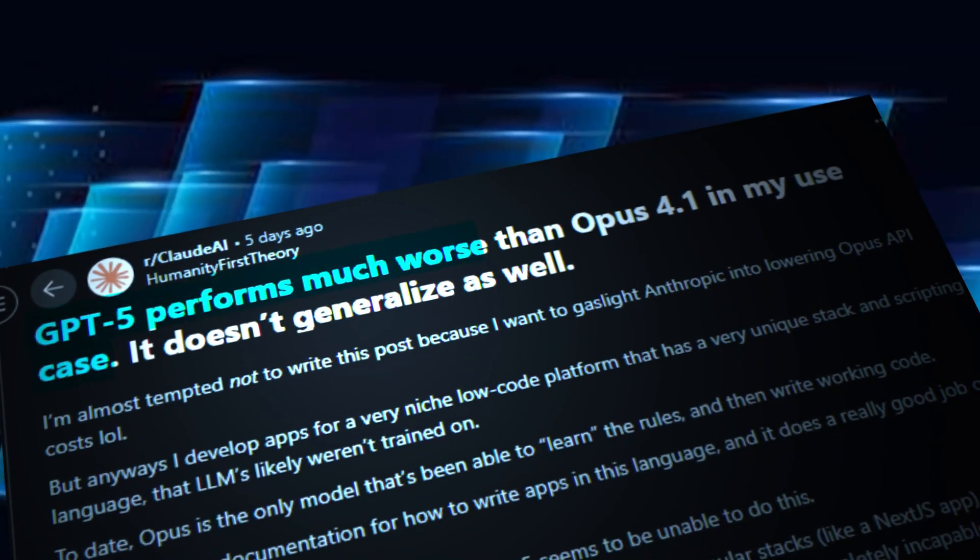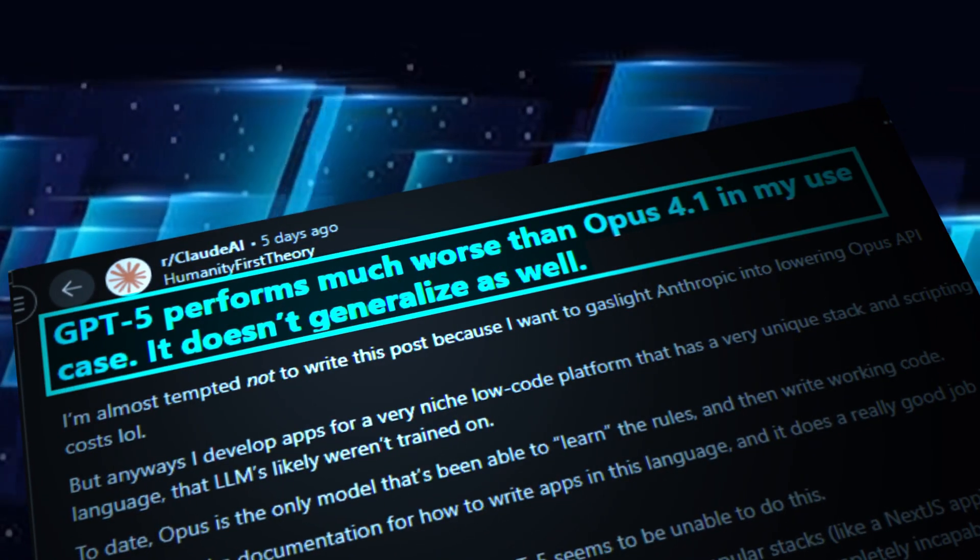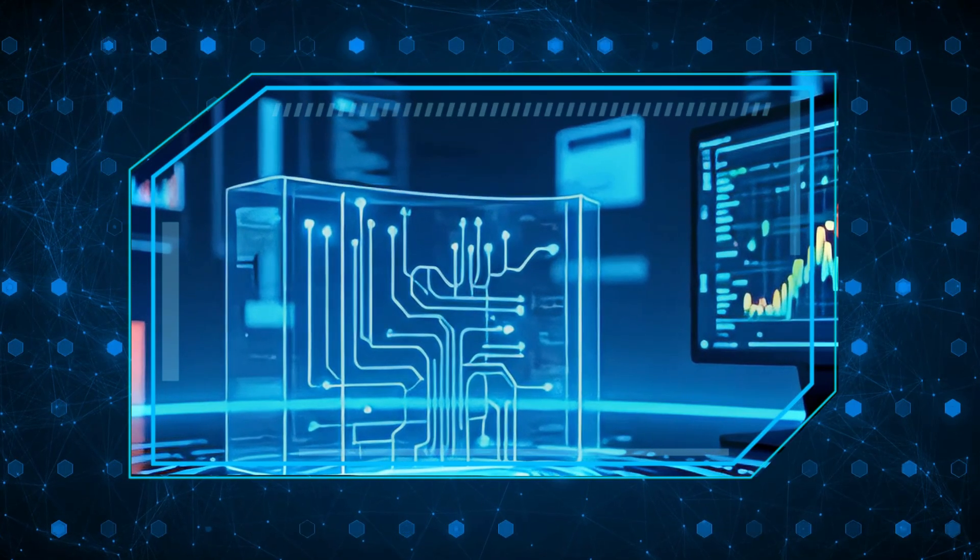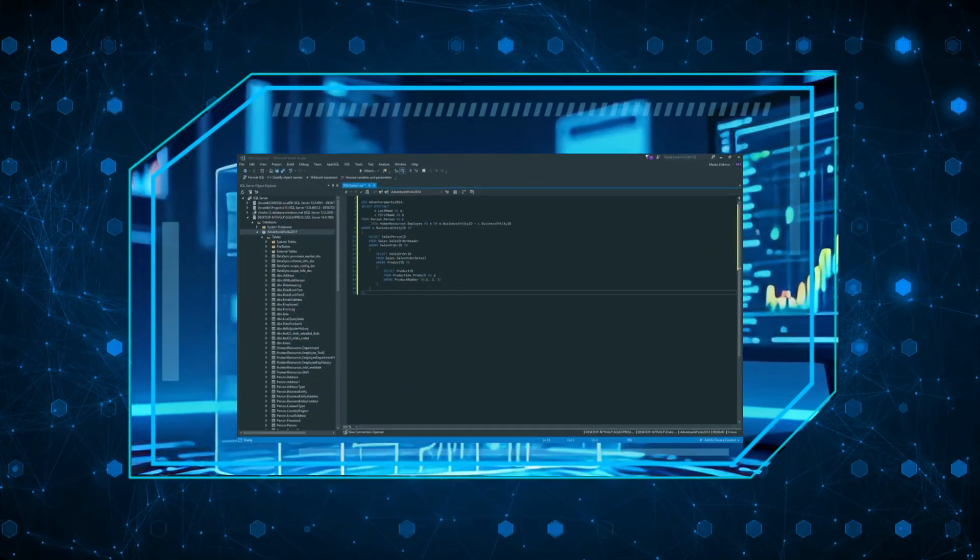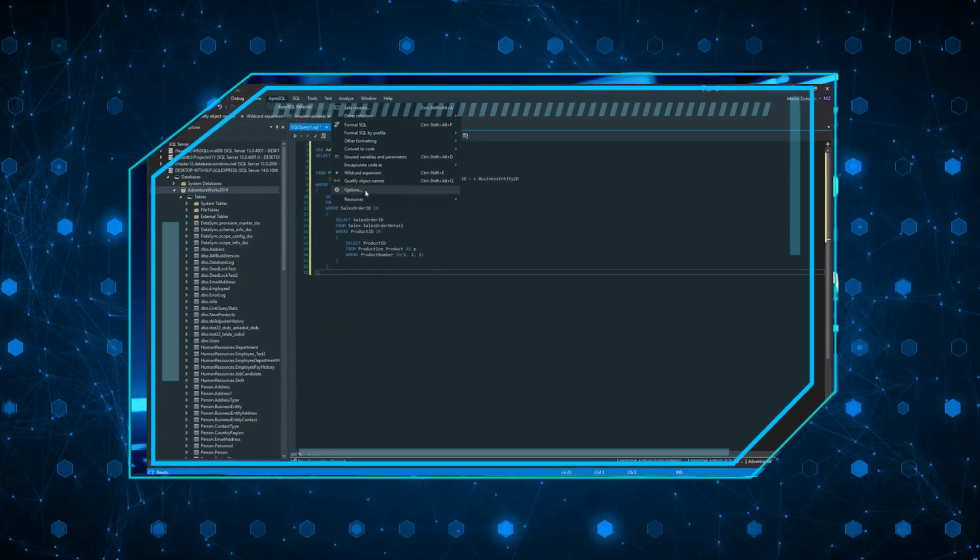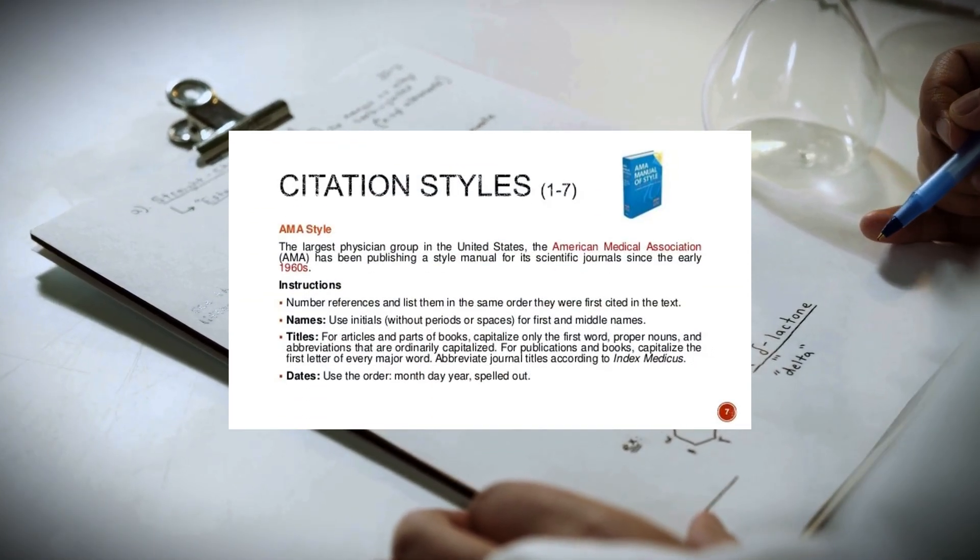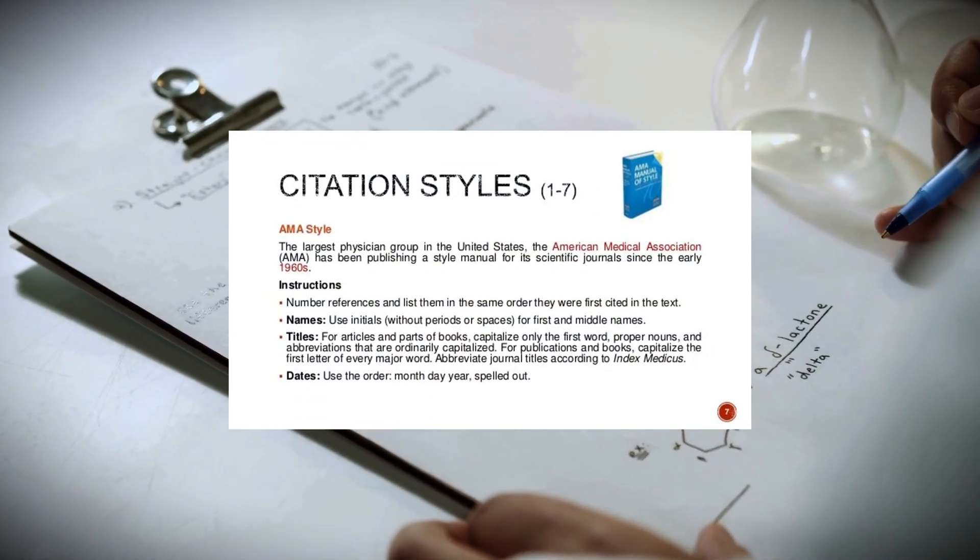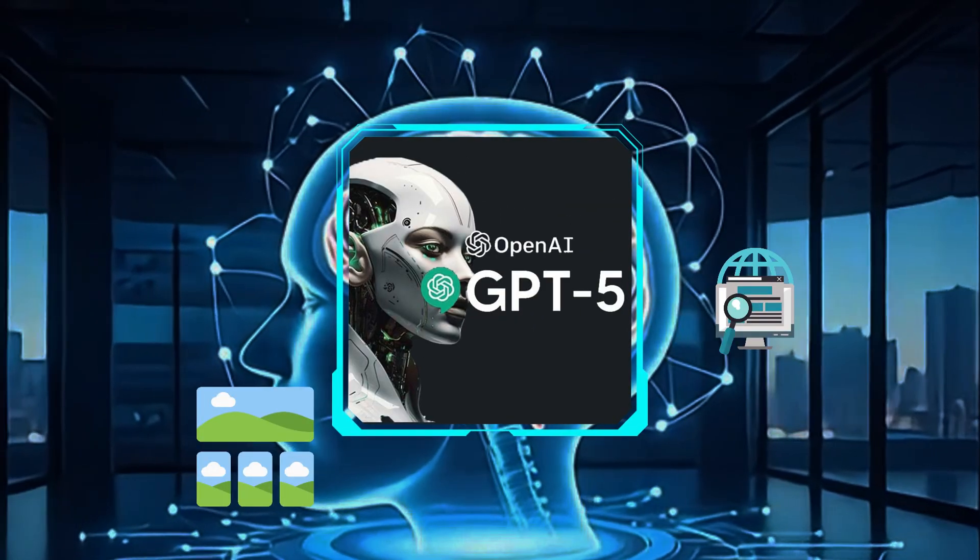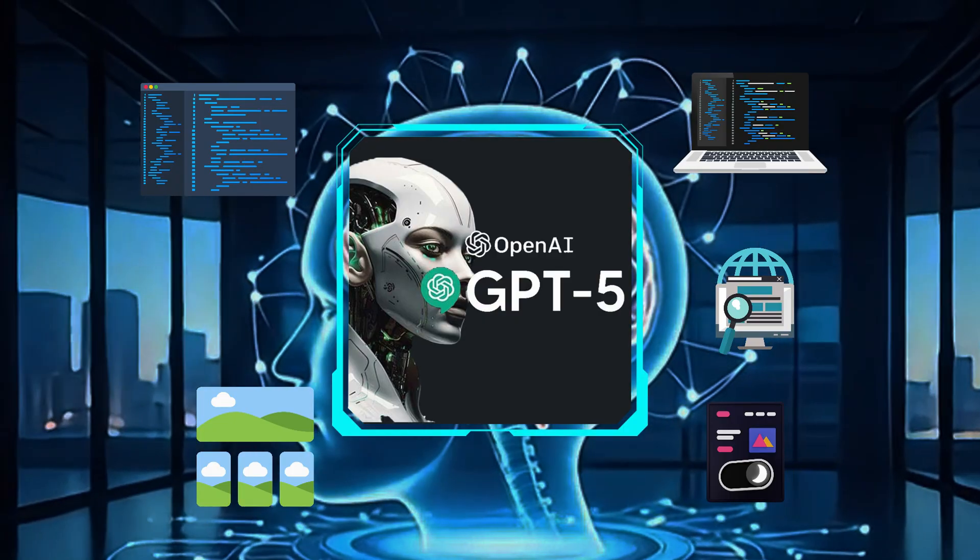Despite the benchmarks, real-world users on Reddit have posted nuanced feedback. GPT-5 performs much worse than Opus 4.1 in my use. Yet this usually comes from specific workflows. For example, heavy refactoring of legacy code where Claude's long-term structural retention pays off, or dense legal or academic writing with strict citation format—Claude often maintains style guides more rigidly over 10k-plus tokens. The takeaway? GPT-5 dominates in breadth and cross-modal reasoning, but performance perception depends heavily on task type and whether the model's unified design benefits that specific job.